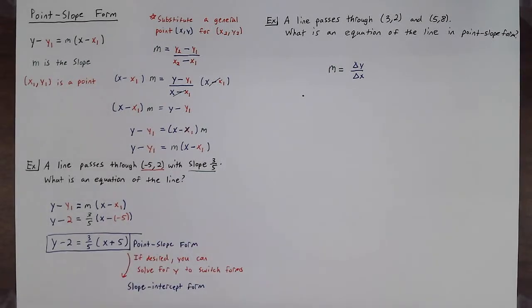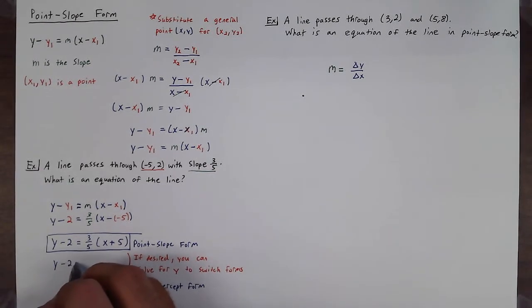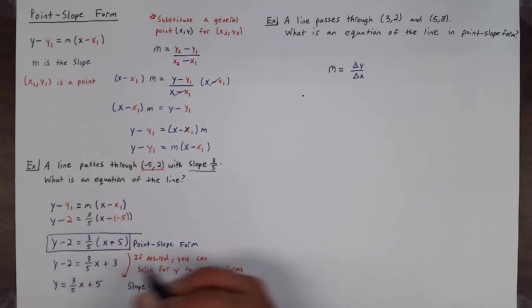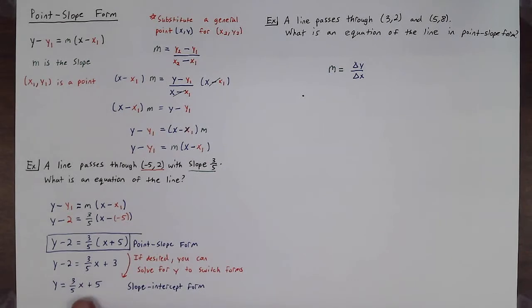Now if desired you can solve for y to switch forms to slope-intercept. It's a two-step process. You first distribute the three-fifths giving you y minus two is equal to three-fifths x plus three. So these are both equations of the line while this one is in point-slope form.